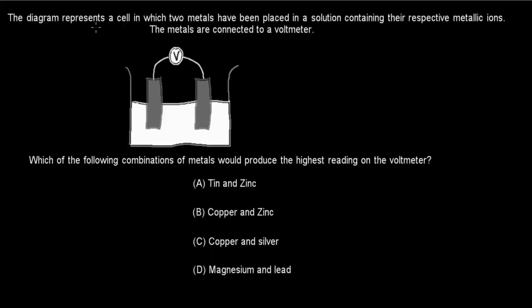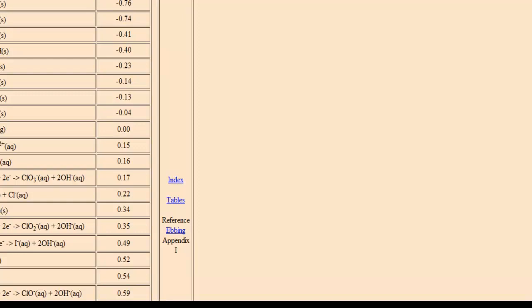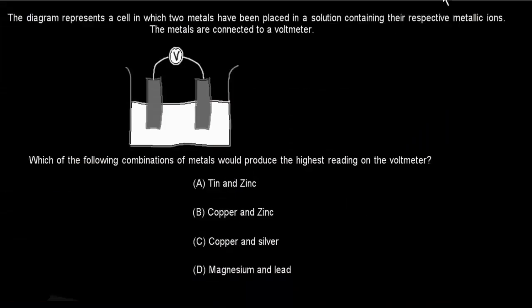The next question: a cell has two metals placed in solutions of their respective metallic ions, connected to a voltmeter. Which combination of metals will produce the highest reading on the voltmeter? A: tin and zinc. B: copper and zinc. C: copper and silver. D: magnesium and lead. You need to use the standard reduction potential table to answer this question.